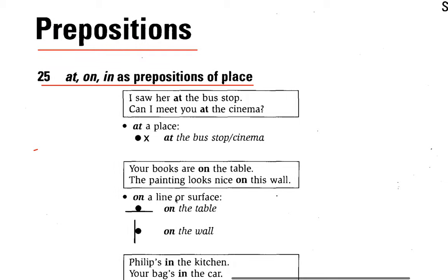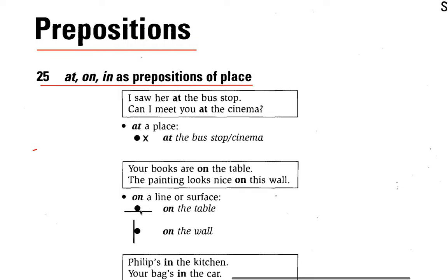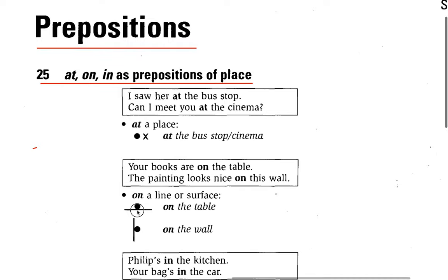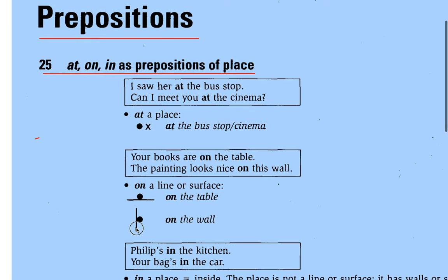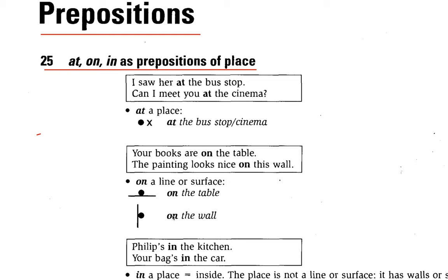On is used for a line or surface. For example, here you can see the picture — on the table. You can see one more: here is on the wall.